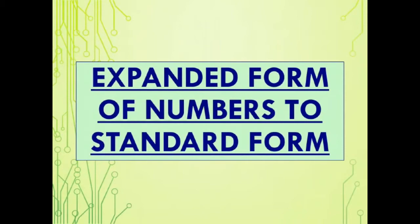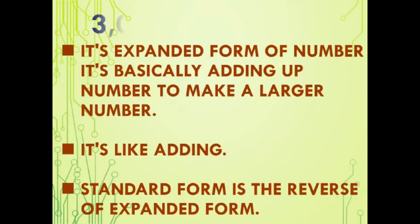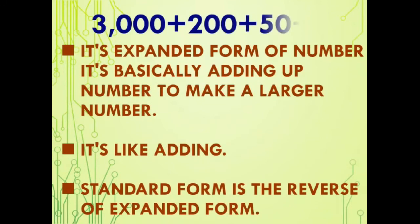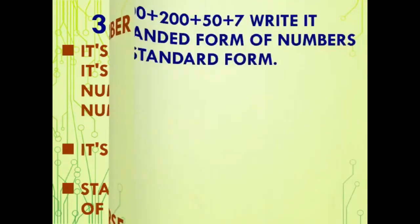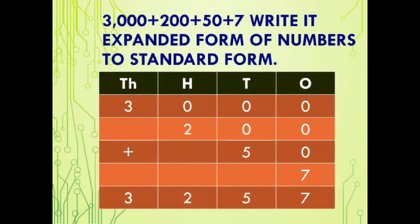Expanded form of numbers to standard form. Students, 3,000 + 200 + 50 + 7 is the expanded form of a number. It is basically adding up numbers to make a larger number. Standard form is the reverse of expanded form.